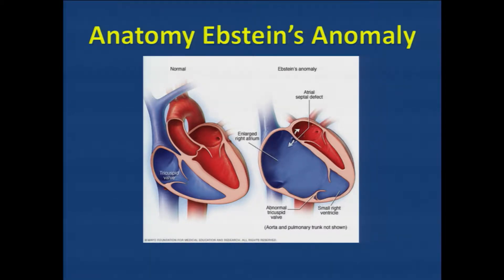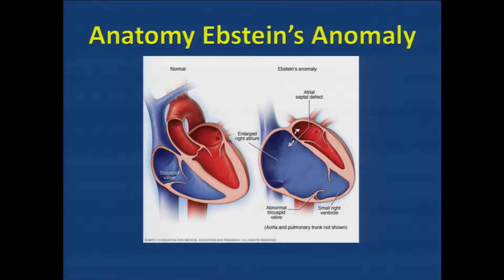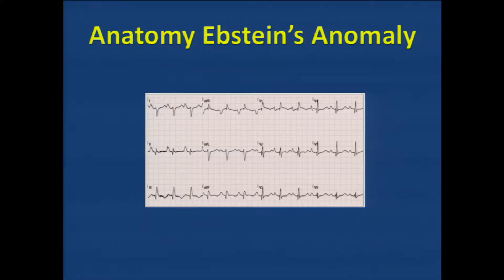You have a zone of coaptation — the point where the leaflets come together to prevent regurgitation — way down towards the apex of the heart. With Ebstein's anomaly, they almost always have some regurgitation, so the valve is not doing a great job of making up for the deficit.